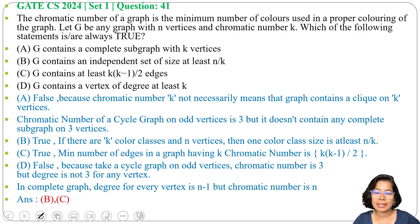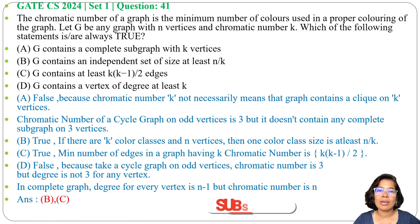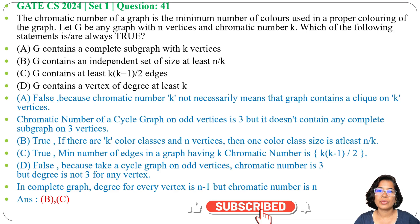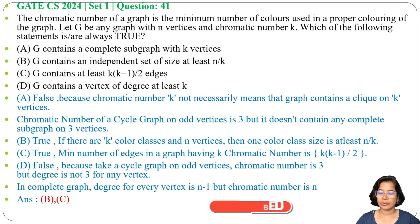So the answer is option B and option C: G contains an independent set of size at least N/K, and G contains at least K×(K−1)/2 edges. I have already discussed graph coloring — please go through that lecture. If this lecture is helpful, please like, share, and subscribe. Thank you.